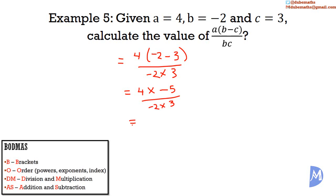There are no orders. So we do division and multiplication from left to right. 4 multiplied by negative 5 is equal to negative 20. And negative 2 multiplied by 3 is equal to negative 6. 20 divided by 6 can be reduced to 10 over 3. So we have negative 10 over 3. And that is 5 examples of substitution.